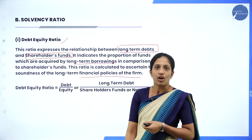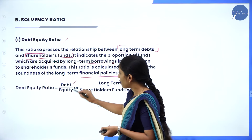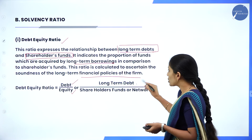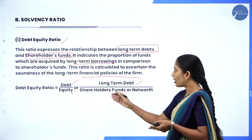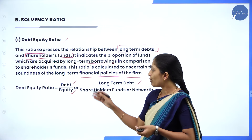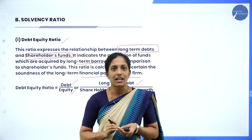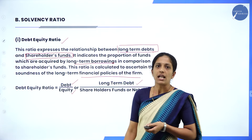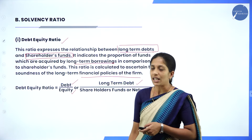The formula of debt equity ratio is: Debt equity ratio = Long term debt divided by equity, where debt means long term debt and equity is shareholders fund or net worth of the business. So the formula is long term debt divided by shareholders fund.